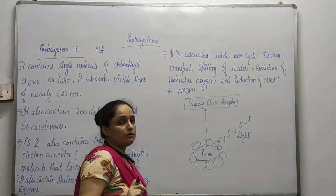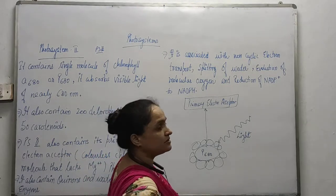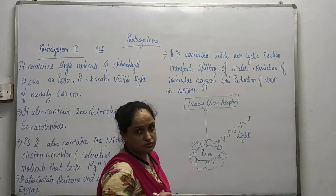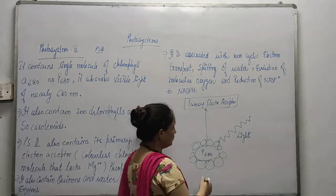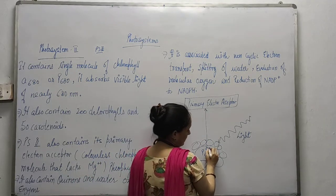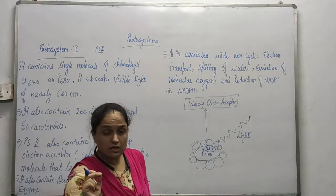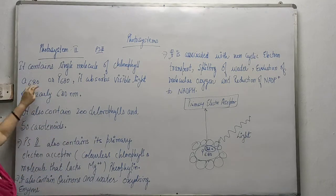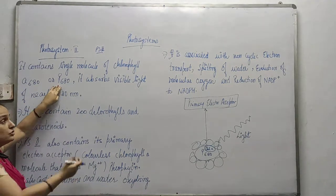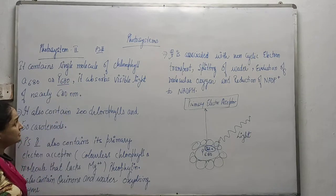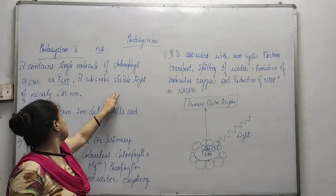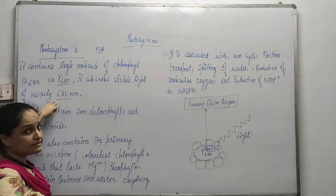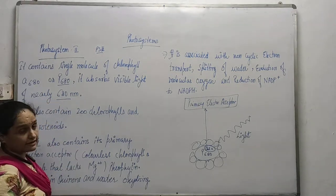One thing to remember is that whatever the pigment system may be — whether 1 or 2 — the pigment molecule is always Chlorophyll A only. Another form you can write is P680. It absorbs visible light of nearly 680nm, which is the reason it is named P680 or A680.